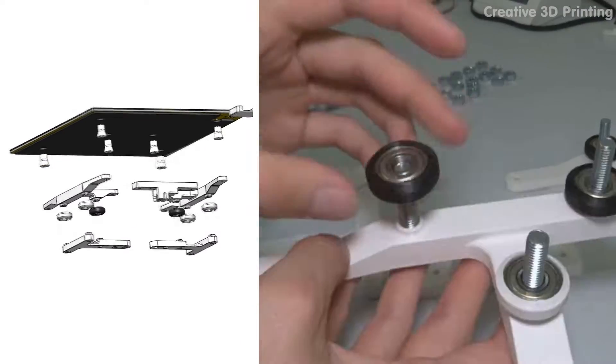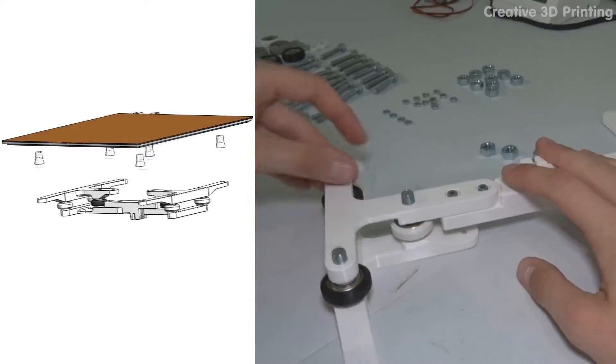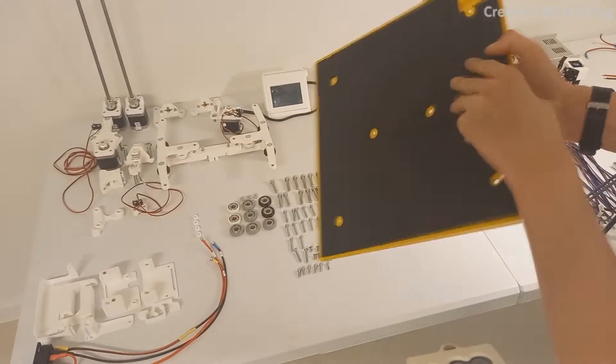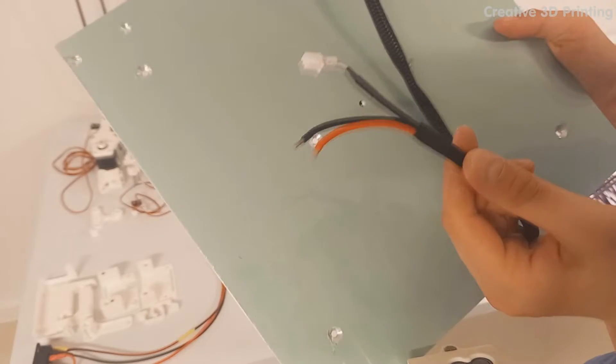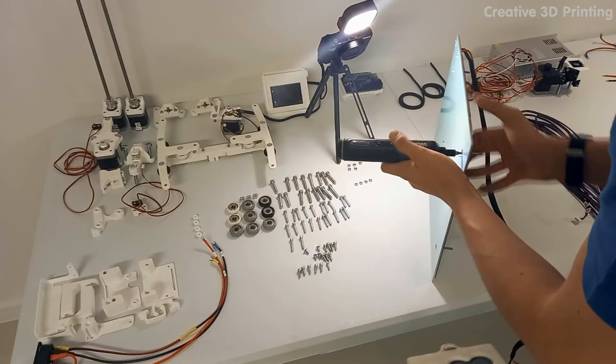The Y carriage is equipped with ball bearings and wheels for smooth movement along the aluminum profiles. The heated bed is secured with M4 countersink bolts and spacers will also be added later.